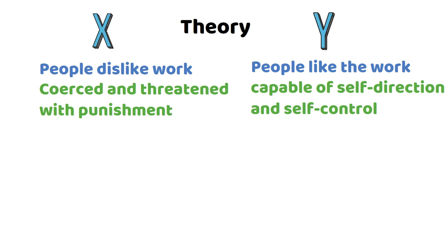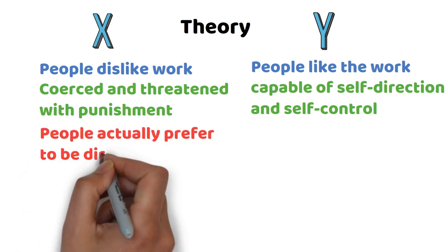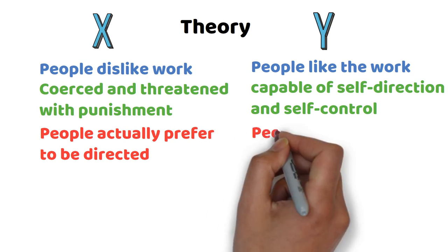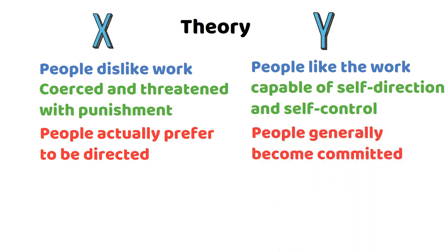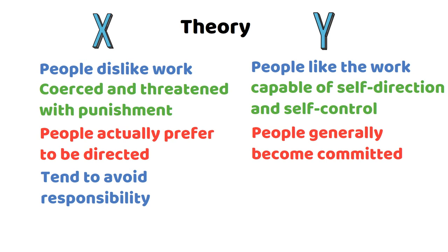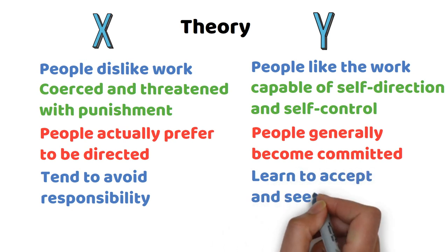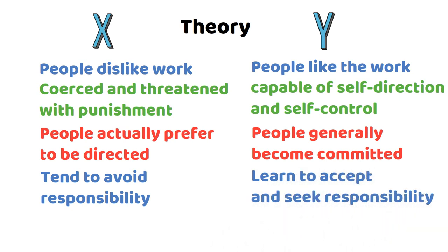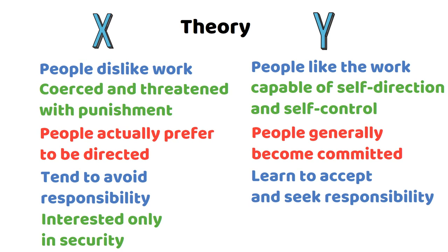Theory X says that most people actually prefer to be directed. Theory Y says that people generally become committed to organizational objectives if they are rewarded for doing so. Theory X says that people tend to avoid responsibility and exhibit little ambition. Theory Y says that the typical employee can learn to accept and seek responsibility. Theory X says that employees are interested only in security. Theory Y says that the typical member of the general population has imagination, ingenuity, and creativity.